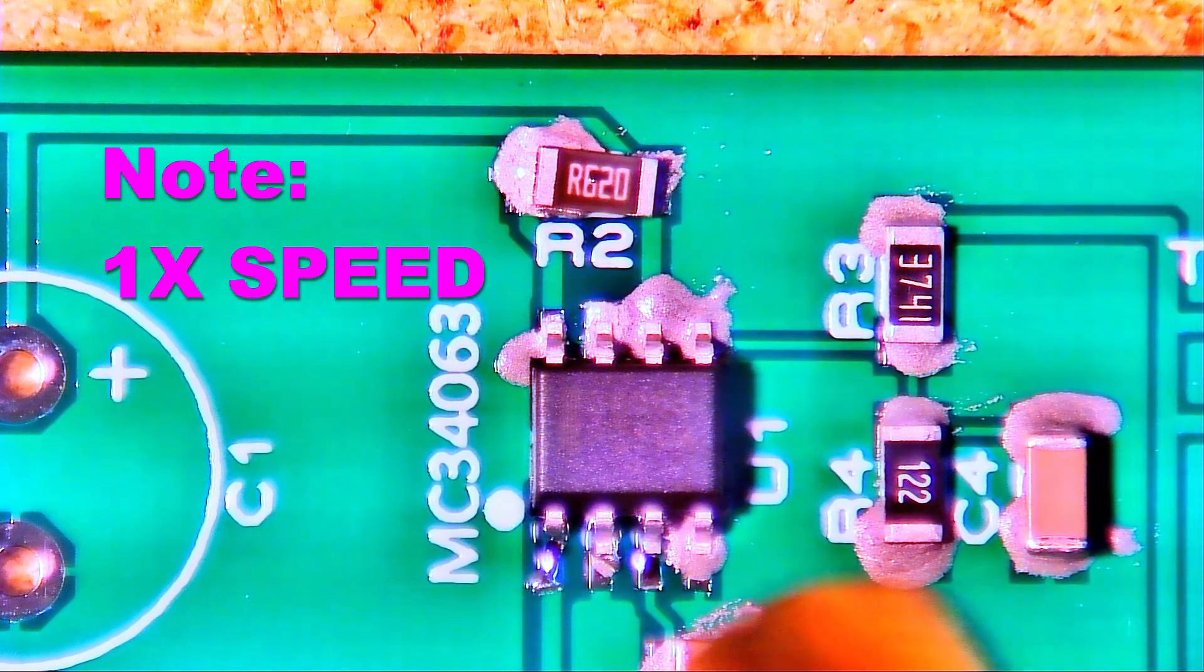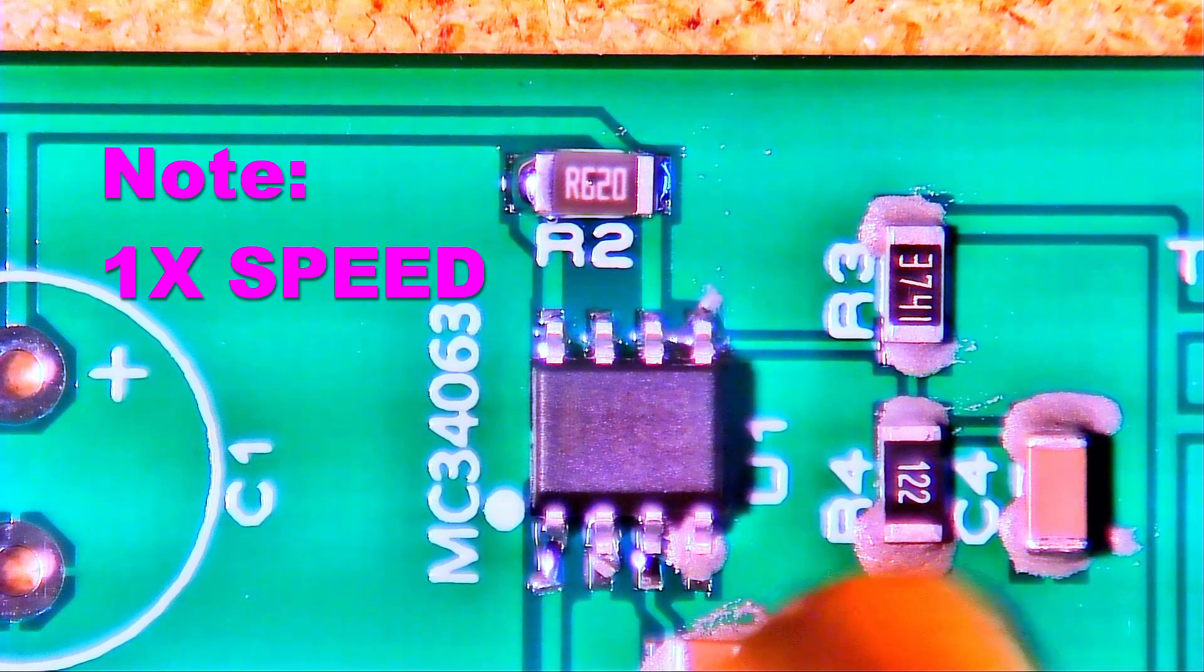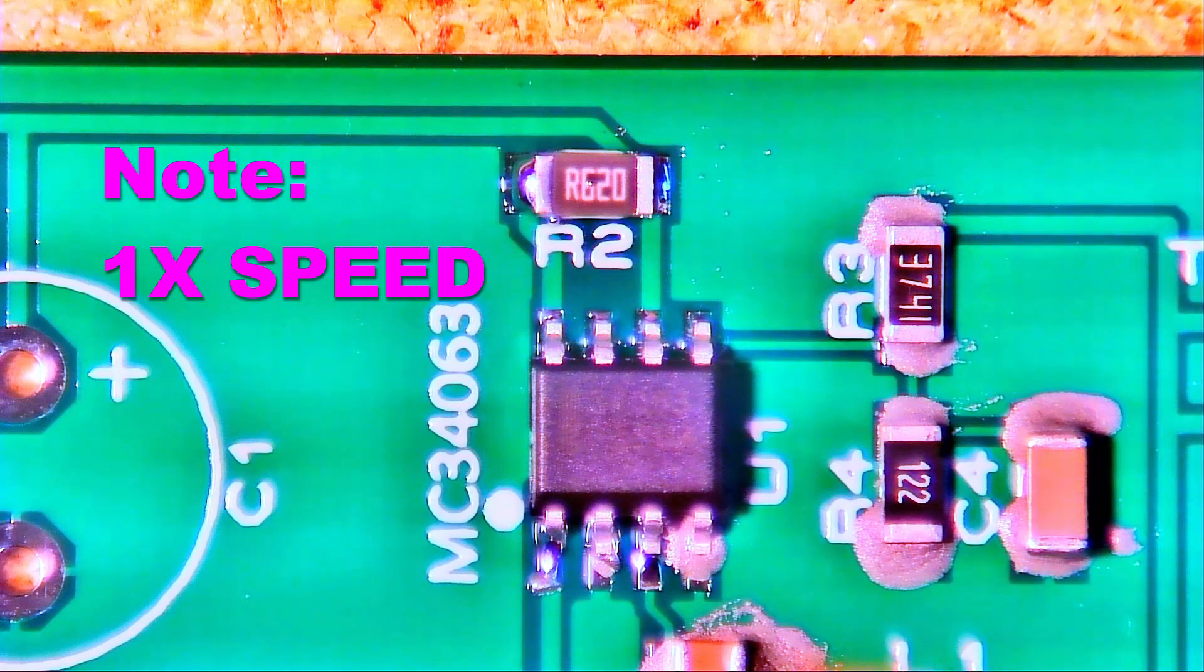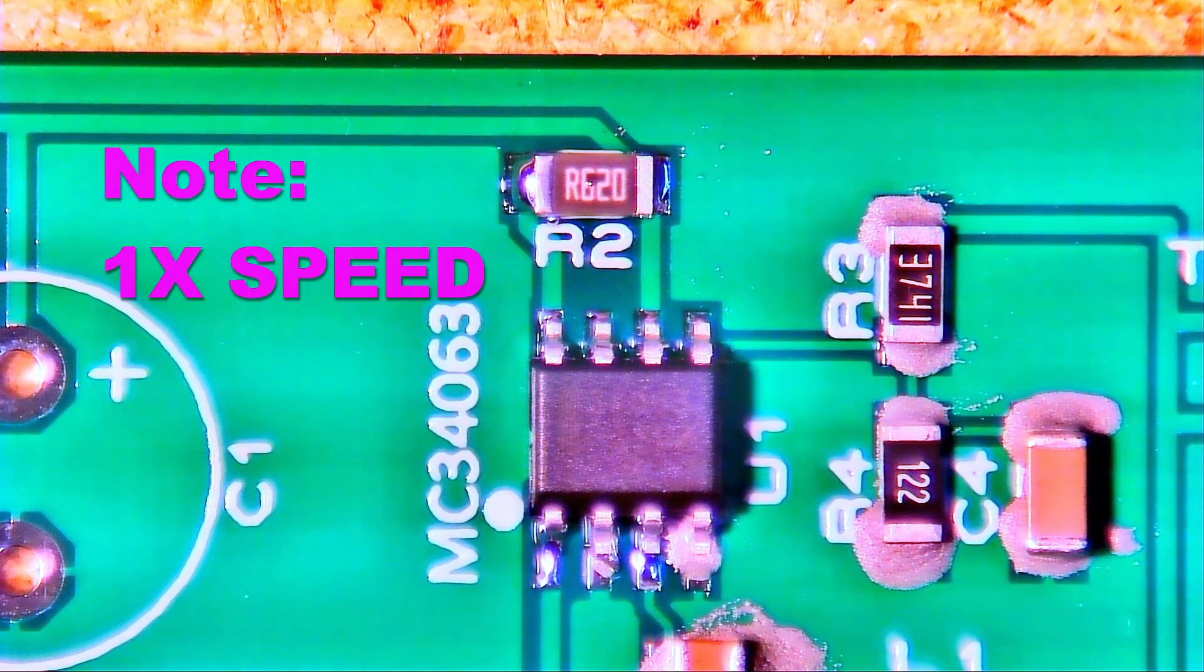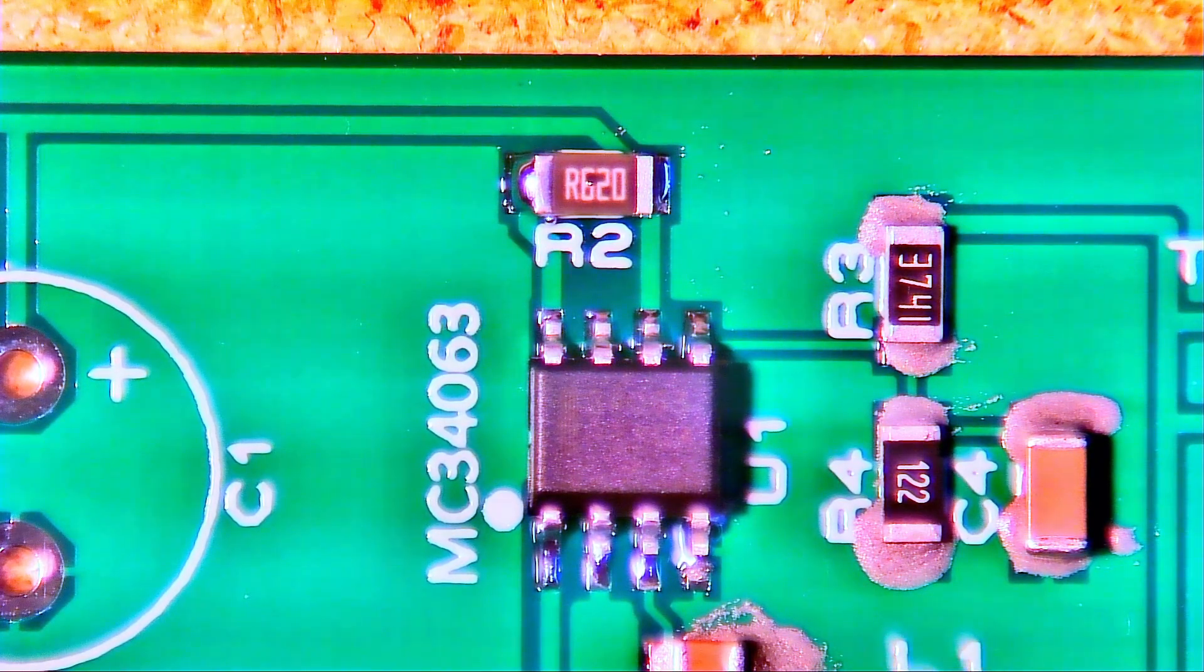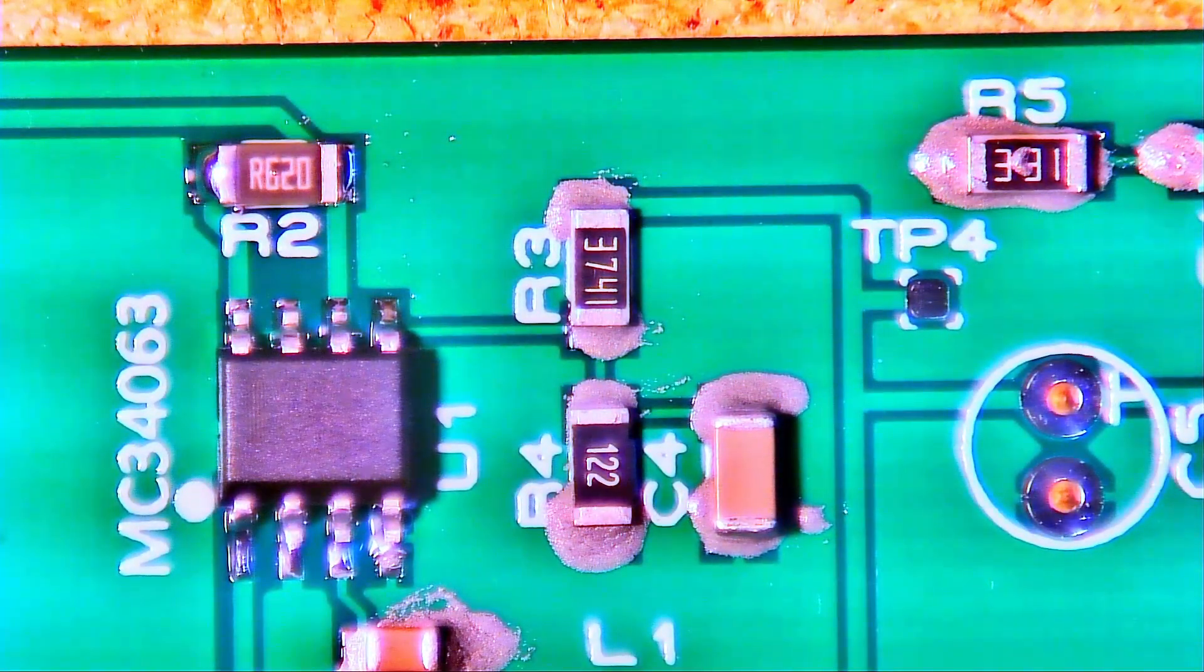And so gently warming that SO8 package. And the 0.62 ohm resistor and behind it R2 heats up just naturally. And here we go. So that's all done, all wetted perfectly, and we can get the components beside it.